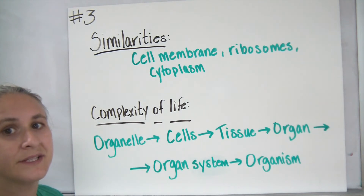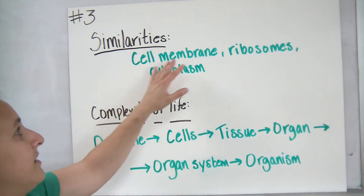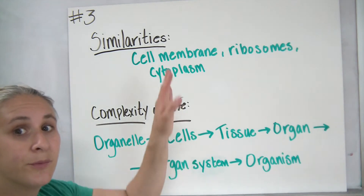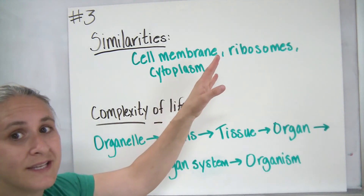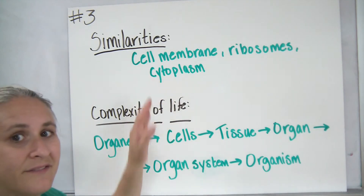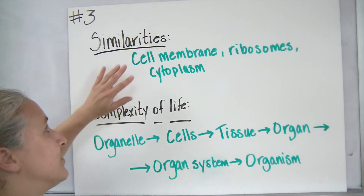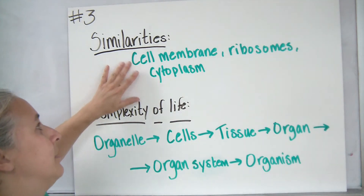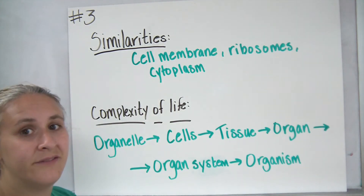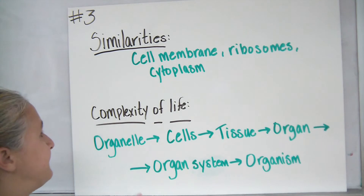There are lots of similarities between these different types of cells. All cells have a cell membrane. Both prokaryotic and eukaryotic cells have ribosomes, and all cells have a cytoplasm. You might want to put a star next to the two terms: cell membrane and cytoplasm, since all living cells have both.